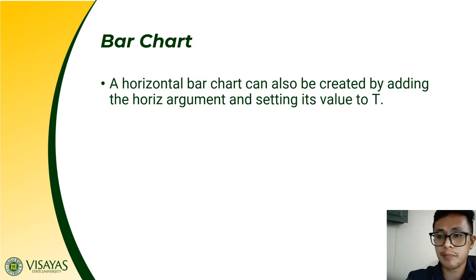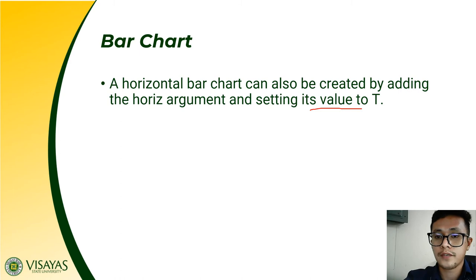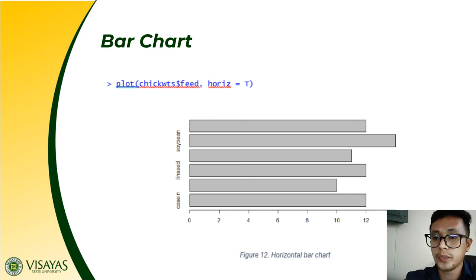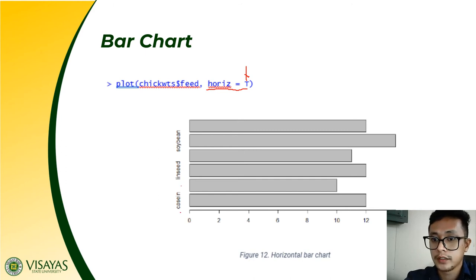A horizontal bar chart can also be created by adding the horiz argument and setting its value to TRUE (T). For example, instead of a vertical bar chart, we add the horiz argument set to T to produce a horizontal bar chart. Just add horiz=T to construct a horizontal bar chart.